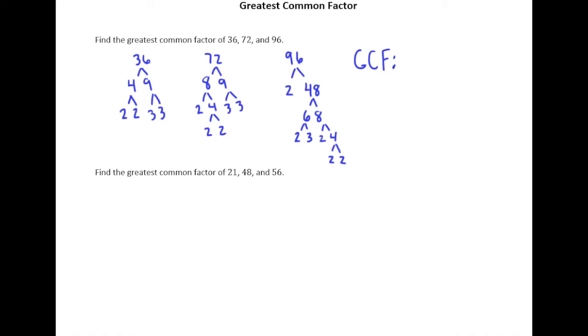And so now we just start our matching process here. So I've got a 2 here, I've got a 2 in 72, and I've got a 2 in 96. The fact that I circled 2 in all three of my numbers means I can write down one 2.